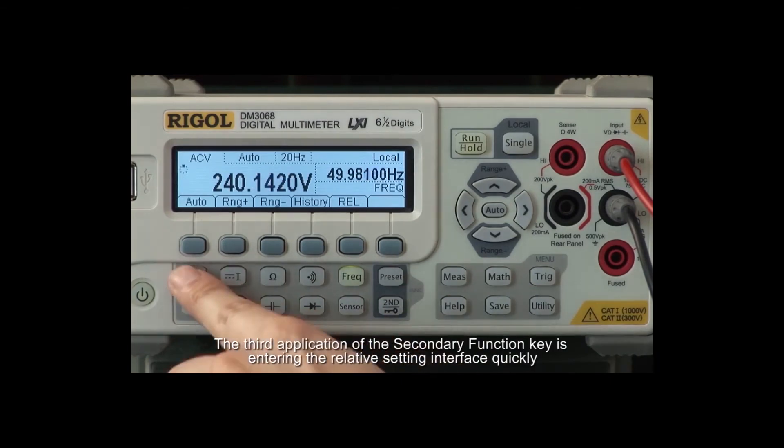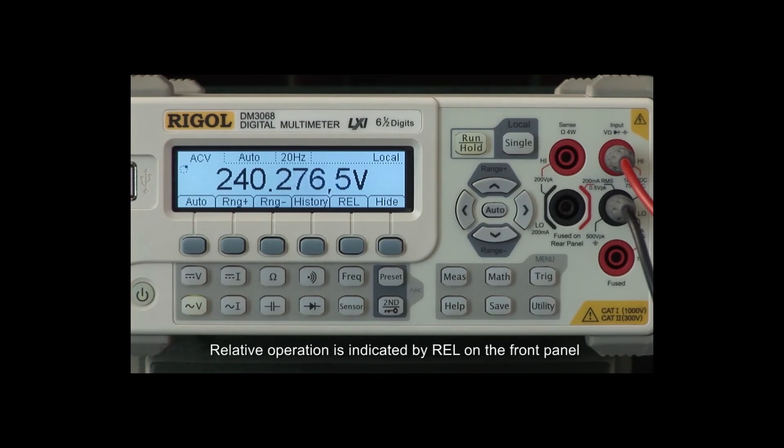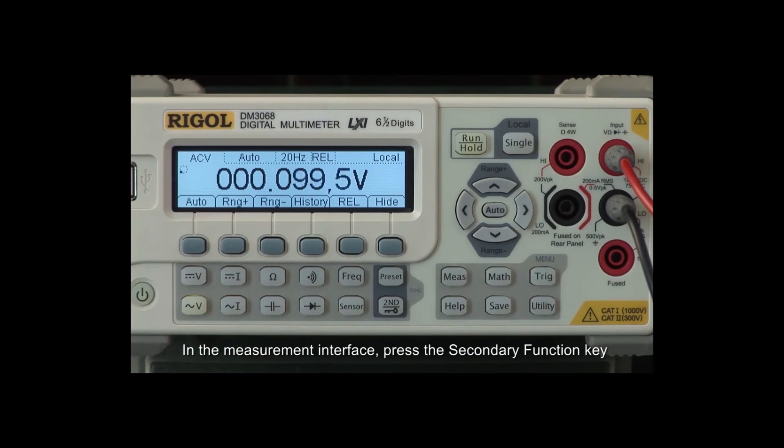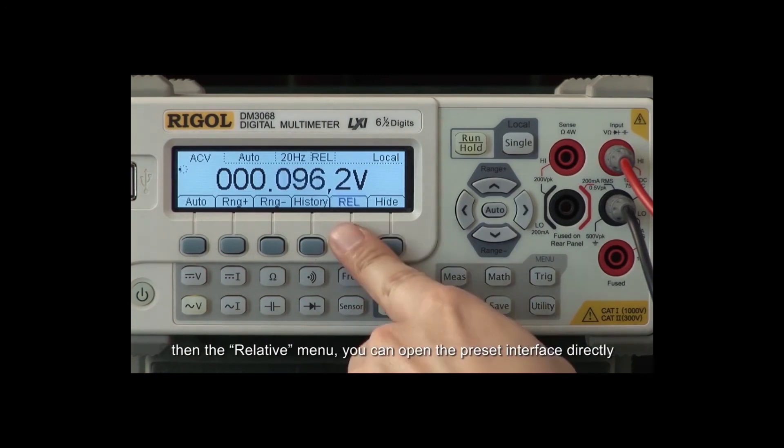The third application of the Secondary Function Key is entering the relative setting interface quickly. Relative operation is indicated by REL on the front panel. It is a math function that displays the difference between a measured and preset value. In the measurement interface, press the Secondary Function Key, then the relative menu. You can open the preset interface directly.